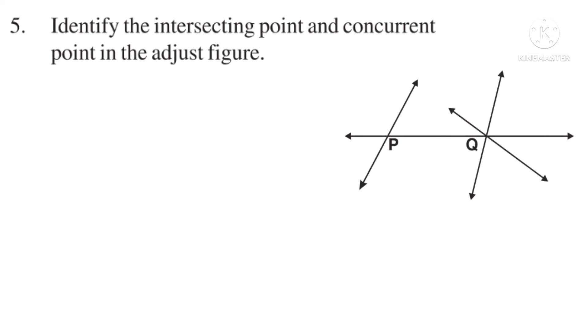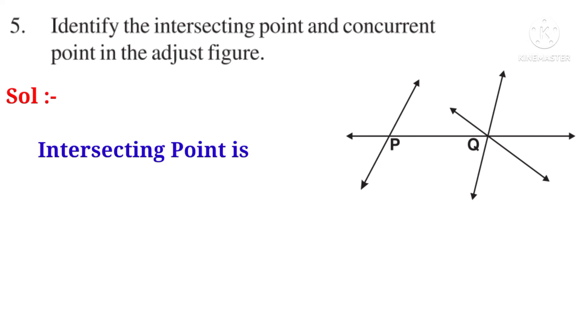Now fifth problem. Identify the intersecting point and concurrent point in the adjacent figure. Solution. Intersecting point means the point where two lines meet. They are P and Q. Concurrent point means the point where more than two lines meet. It is only the point Q.